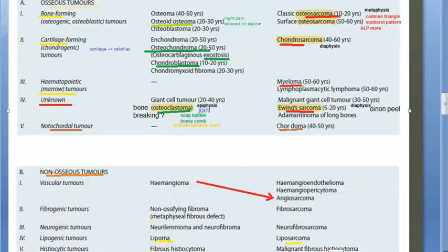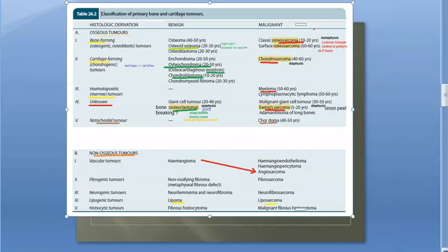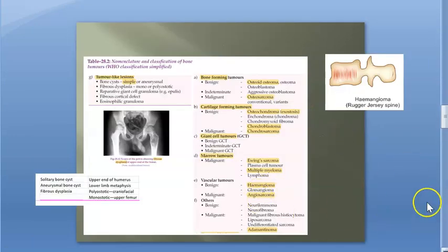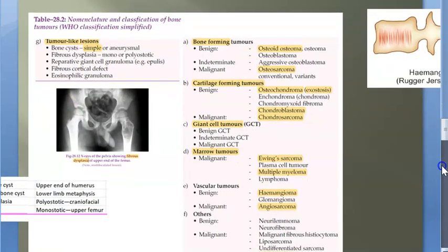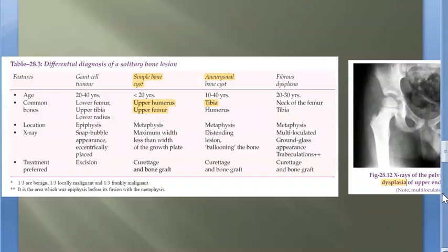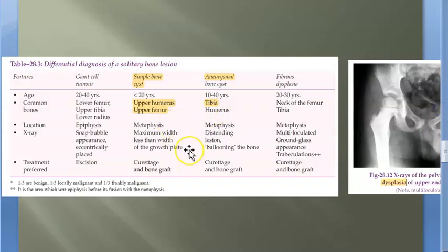Surrounding structures of the bone include vascular tumors like hemangioma and angiosarcoma, lipoma and liposarcoma, neurolemmoma and neurofibrosarcoma. Tumor-like conditions include cysts and fibrous dysplasia. Simple bone cysts typically affect the upper humerus and tibia.